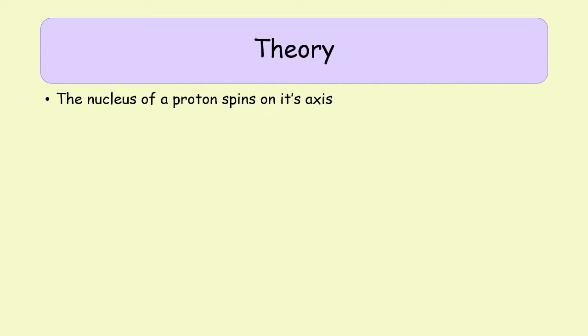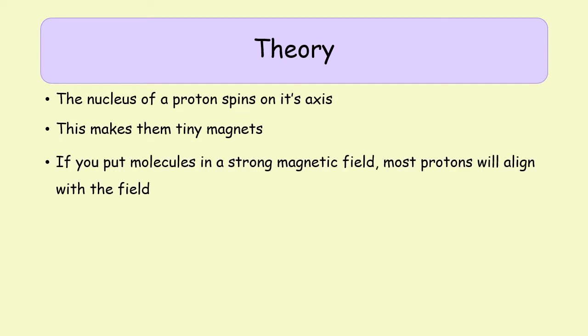So what is the theory behind NMR? Within a proton, the nucleus can be viewed as spinning on its axis. Because it has a positive charge and it's spinning — if you do physics, you'll know that charges moving in circular motions produce an electromagnetic field. So the nucleus of any atom is a tiny magnet. If you then put atoms into an external magnetic field, that magnet can either align itself with that external magnetic field or align against it.